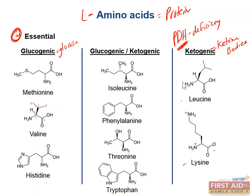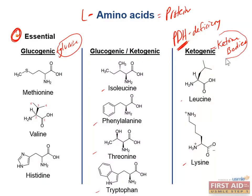The essential amino acids that can be converted to either glucose or ketone bodies include isoleucine, phenylalanine, threonine, and tryptophan. So our amino acids can be converted into glucose derivatives fitting within glycolysis or the TCA cycle, or they can be purely ketogenic like leucine and lysine, or a combination of both.